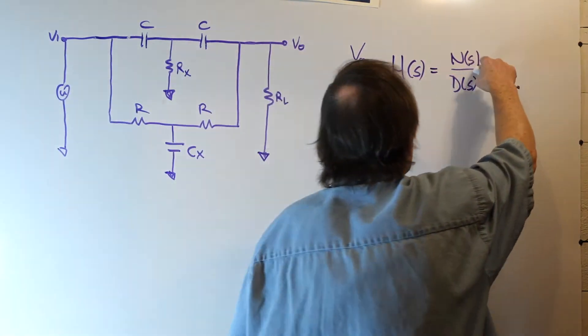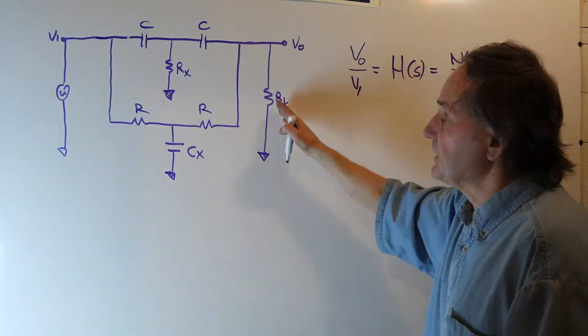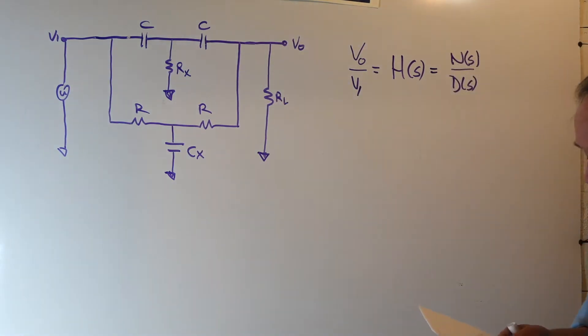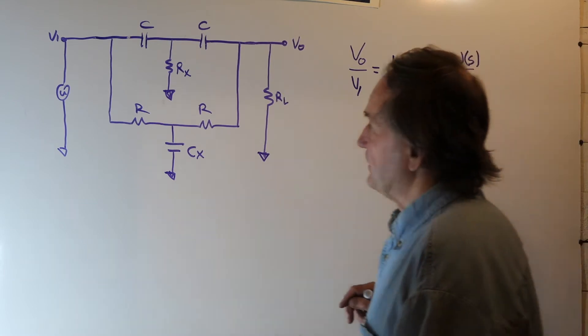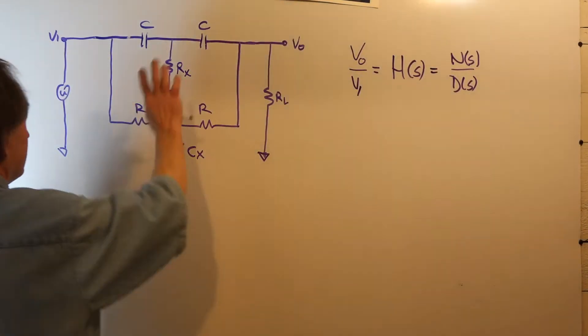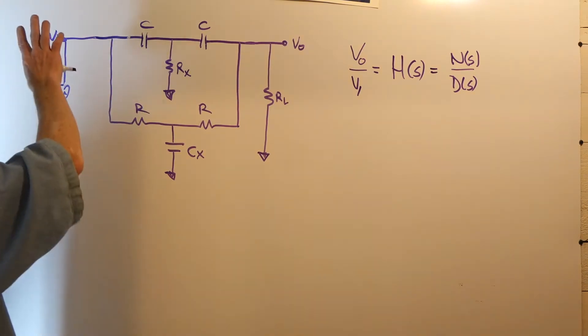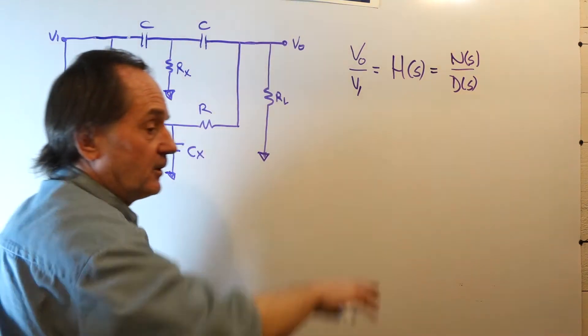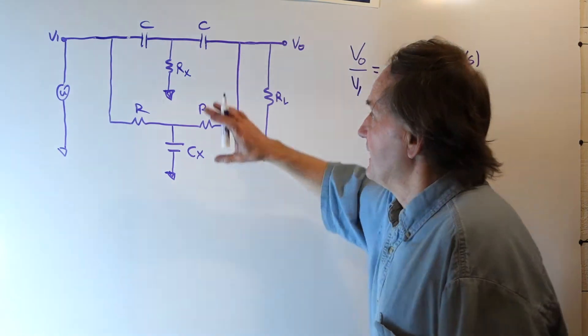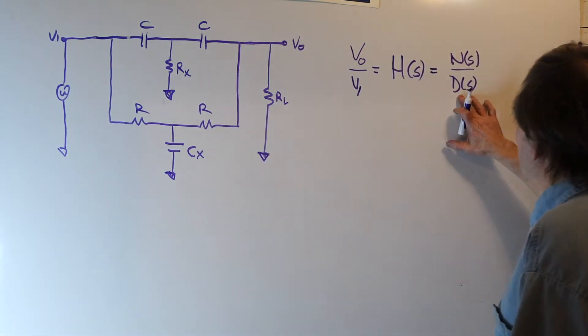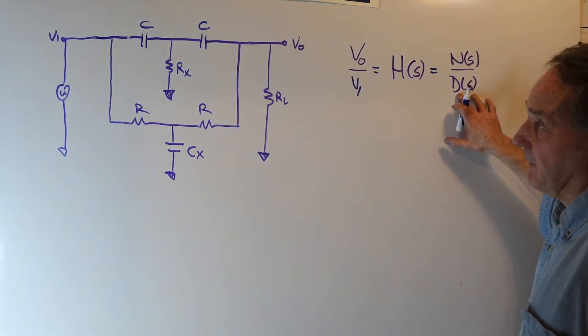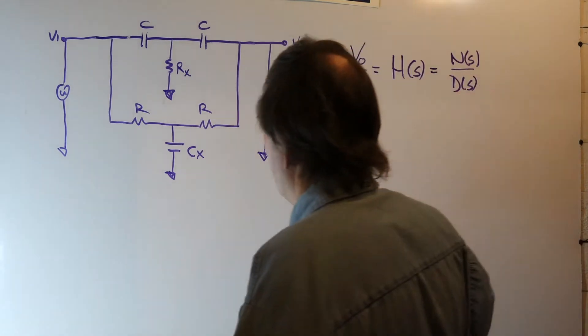However, the numerator polynomial is not. It's independent of RL. The system function is a characteristic of the dead network. If I take all independent sources and set them to zero by replacing them with their internal impedance, the dead network determines the characteristic of the denominator polynomial or the system function.